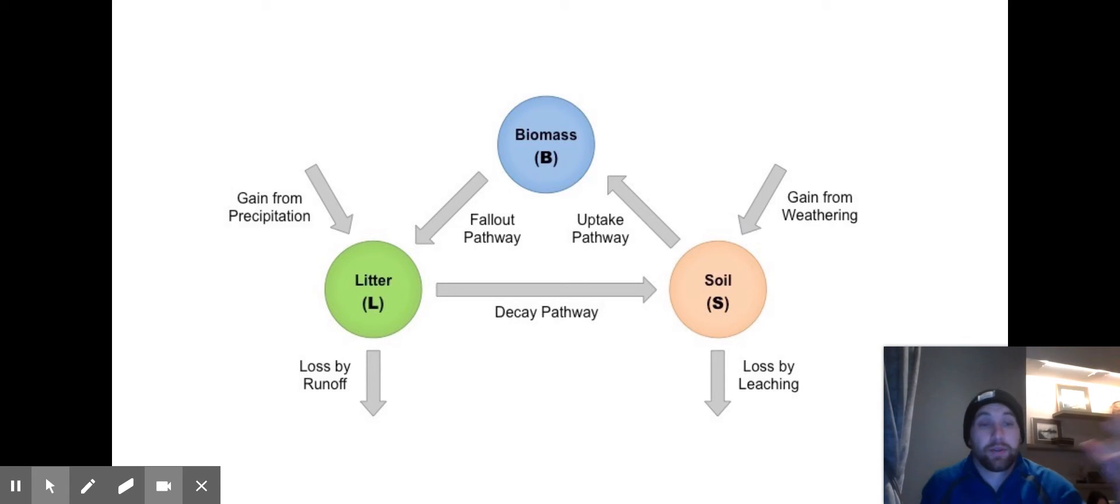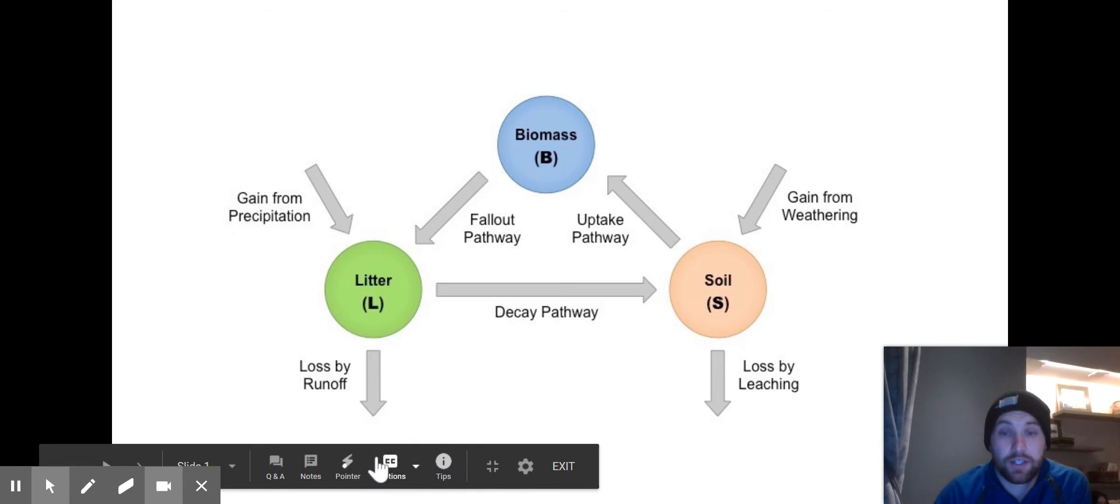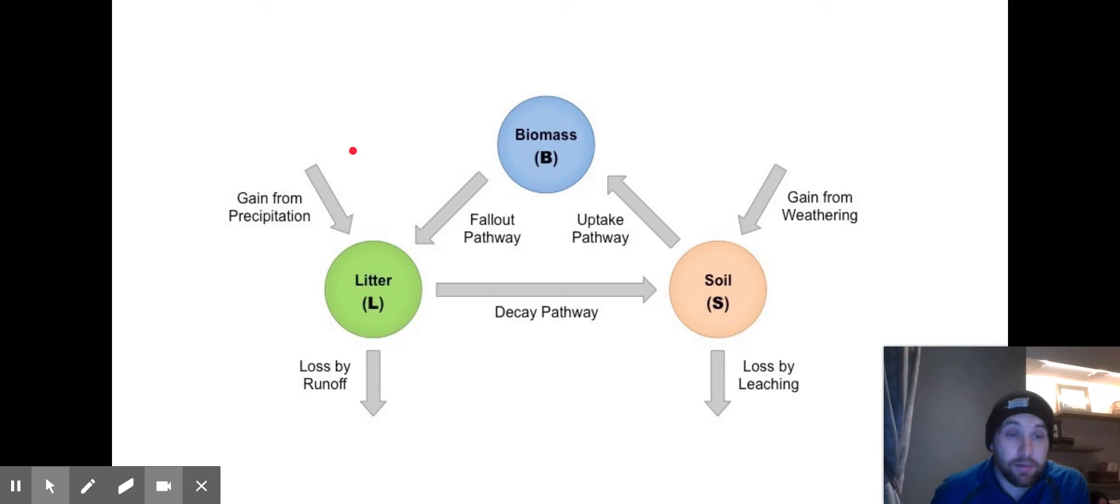The two main inputs into the system are chemicals that are washed in by precipitation, so that's our gain from precipitation. It could be maybe some slightly acidic rain, so we might have nitrogen or carbon that is dissolved into the rainwater, and then that ends up in the soil or ends up falling on to the leaves and can then be added into the system.